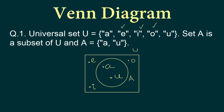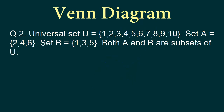Let's take a look at our second question. The universal set contains the numbers 1 through 10. Set A is equal to {2, 3, 4} and set B has {1, 3, 5}. Both A and B are subsets of U. The first thing to realize is we need to look at set A and B and find out if they have any common elements.